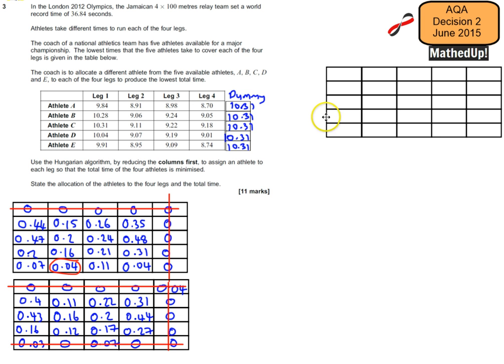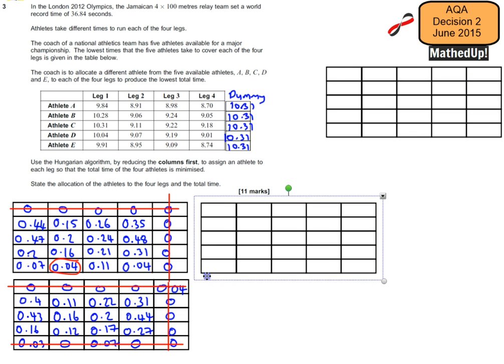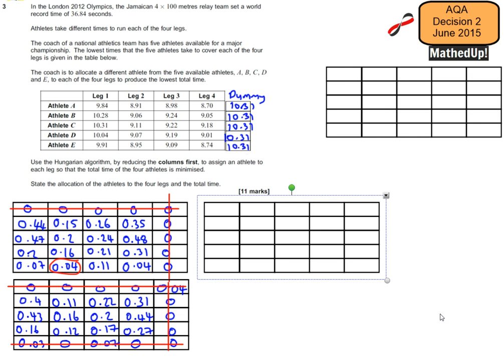So again, we'll grab another one of these, and we'll come over here, and we want to find the minimum of the values that are left. So I think that's going to be 0.11. So again, that 0.11, I'm going to add it onto that one, and add it onto that one. So that's going to become 0.15. That's going to become 0.11.